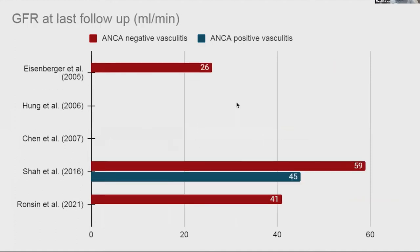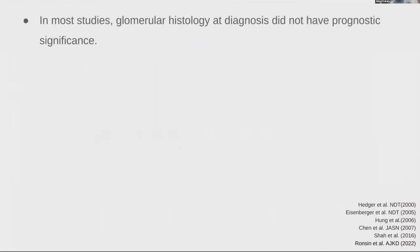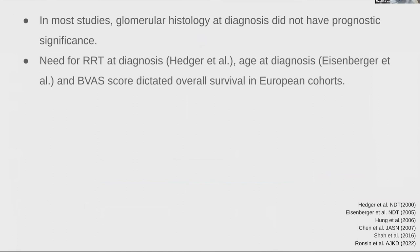The GFR at last follow-up was 59 in the American cohort and 41 in the French cohort. In most studies, the histological classification did not have prognostic significance in ANCA-negative vasculitis, unlike seropositive ANCA vasculitis where Berden classification was important. This may be due to smaller sample sizes. Need for RRT at diagnosis and vasculitis score dictated overall survival in European cohorts.